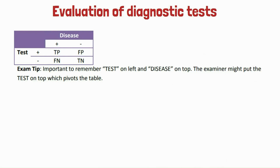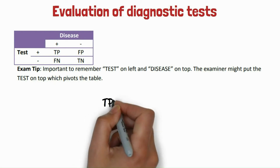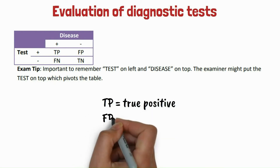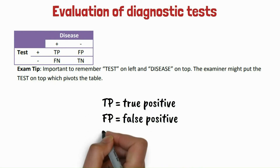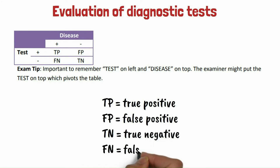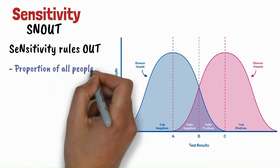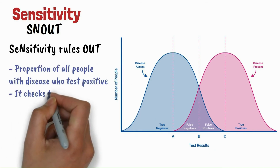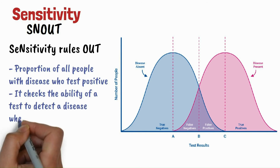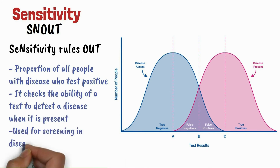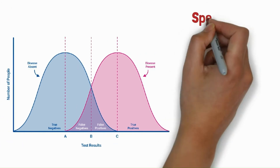Evaluation of diagnostic tests uses a two-by-two table — you should memorize this — comparing test results with the actual presence of disease: TP (true positive), FP (false positive), TN (true negative), FN (false negative). Always remember: SnNout — sensitivity rules out. Sensitivity is the proportion of all people with disease who test positive. It checks the ability of a test to detect a disease when present, and is used for screening in diseases with low prevalence.